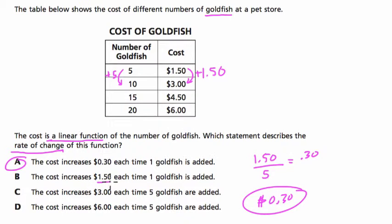Here, B would be correct, but it says $1.50 each time one goldfish was added. That would be correct if it was for every five goldfish.